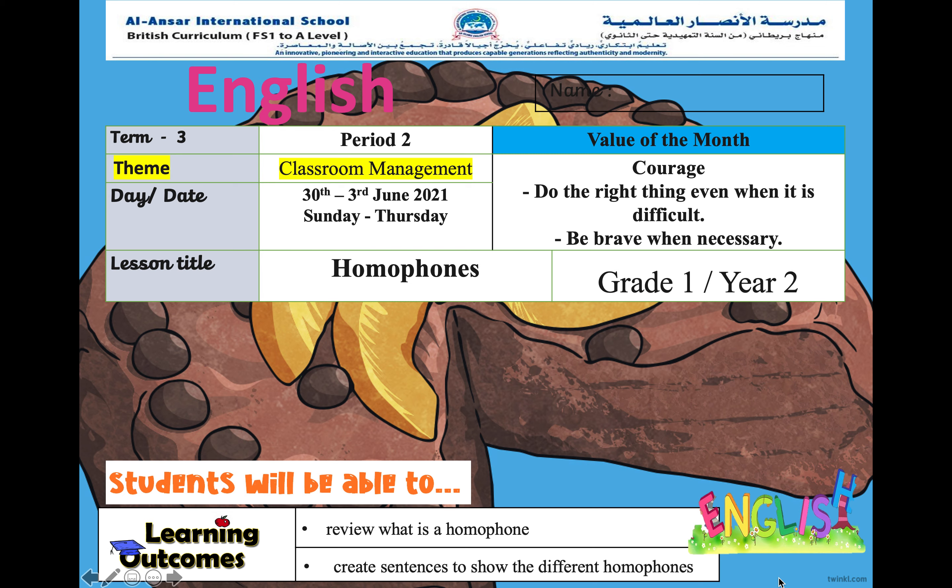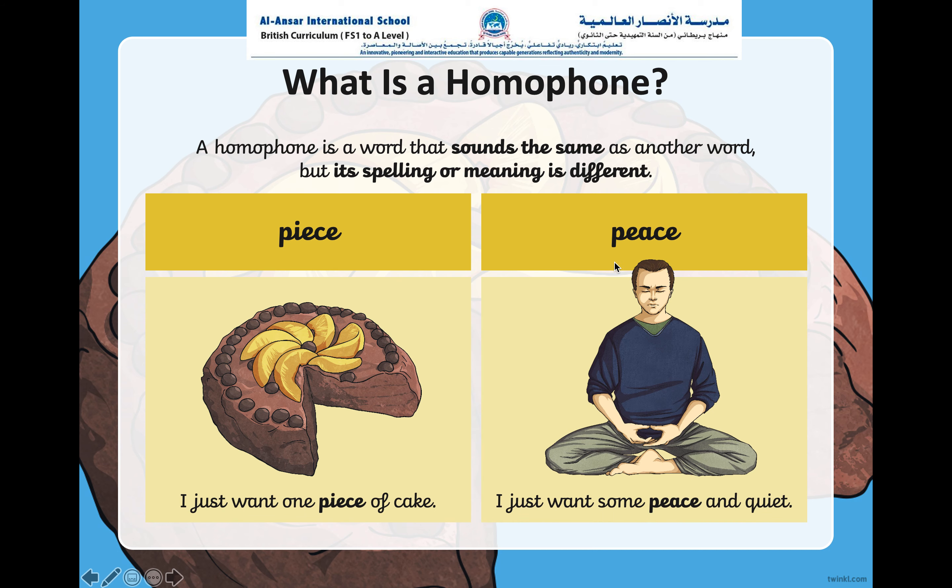Now can you see the spelling is different? You are going to identify that both have a different meaning. The word 'piece' means I just want one piece of cake — it is an amount, so how many. The word 'peace' means I just want some peace and quiet — this word is about a feeling, so how you would like to feel.